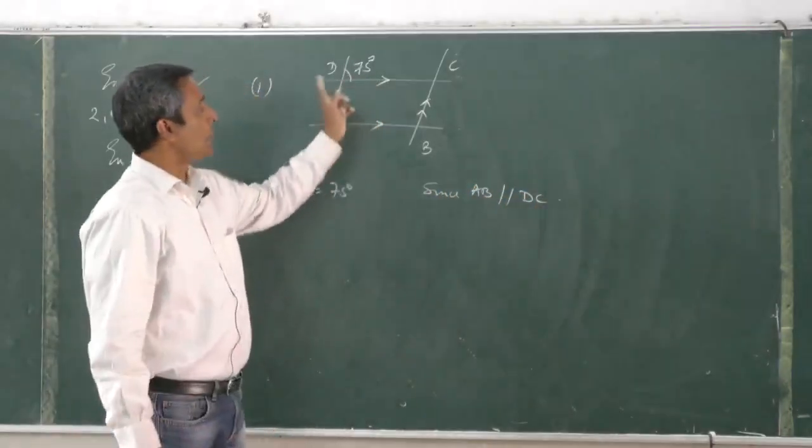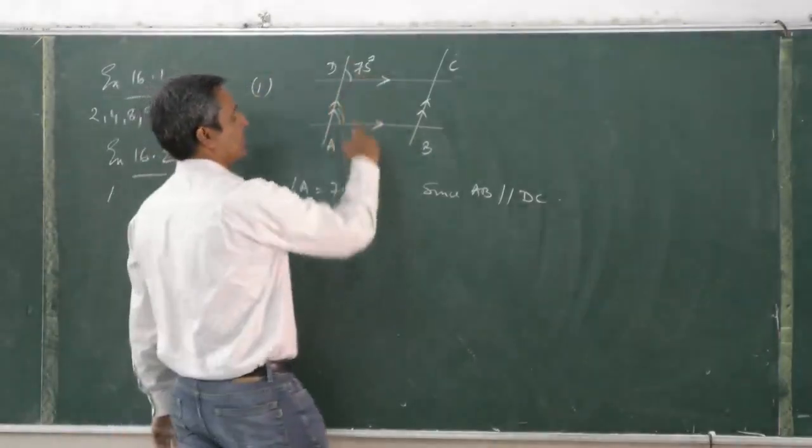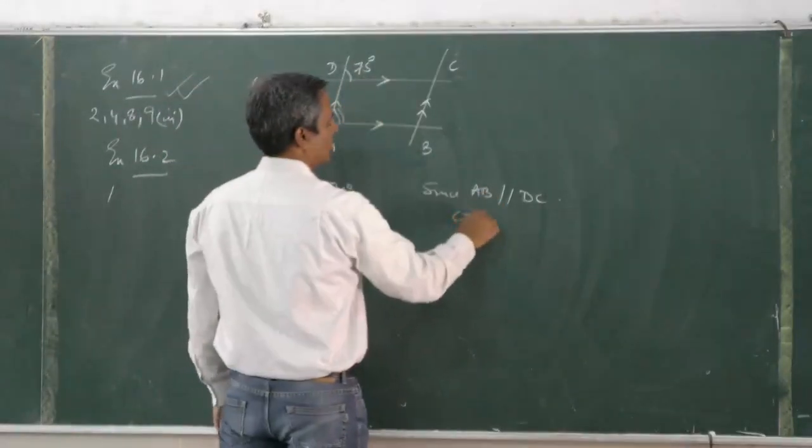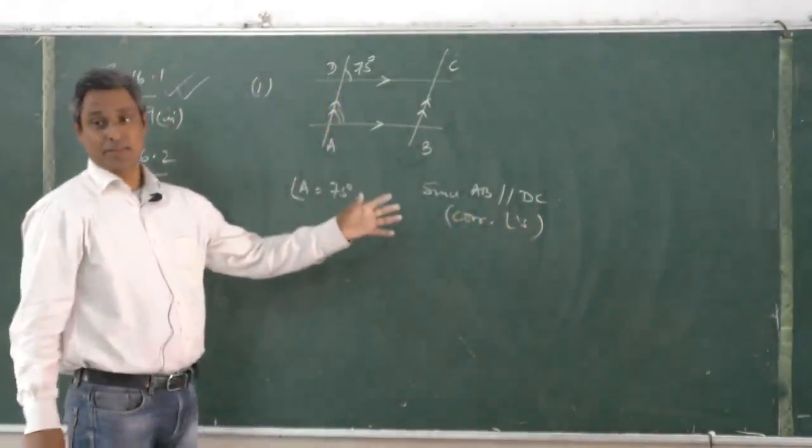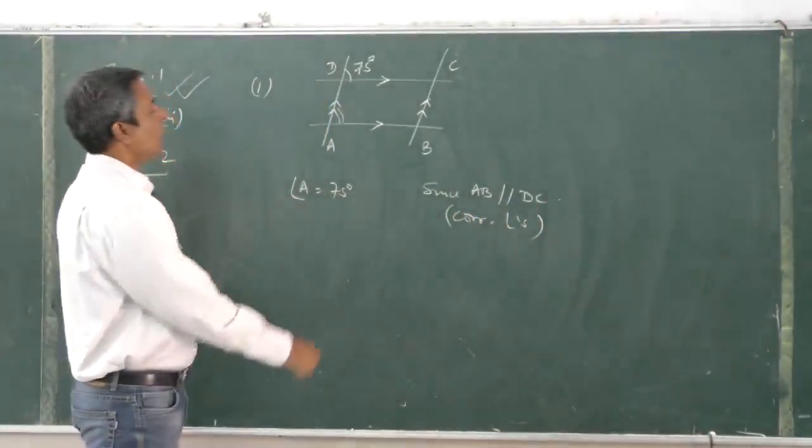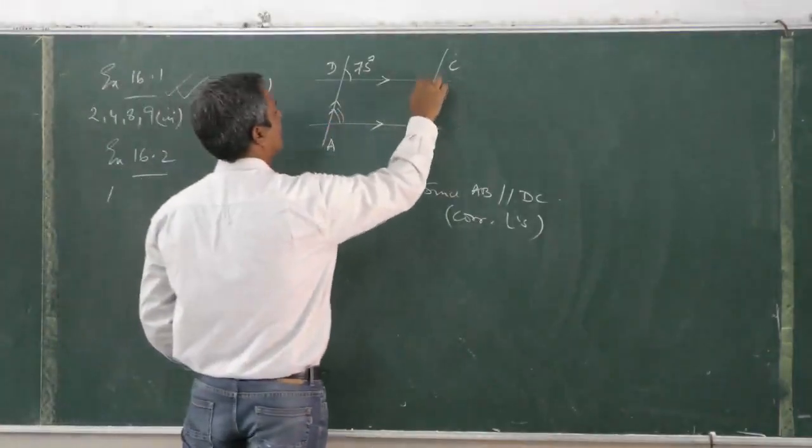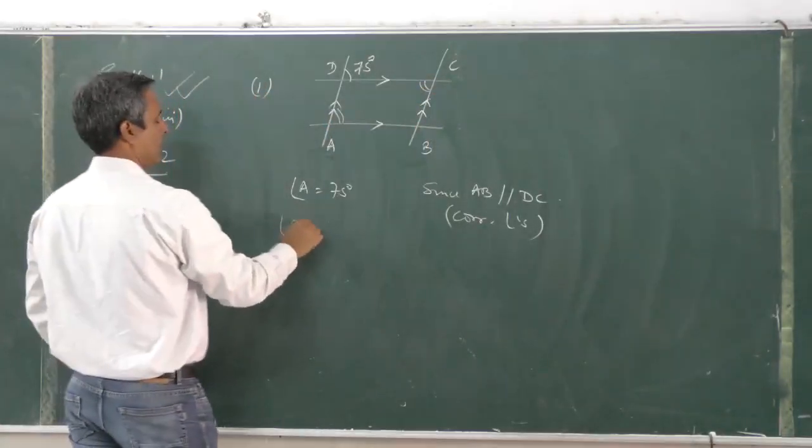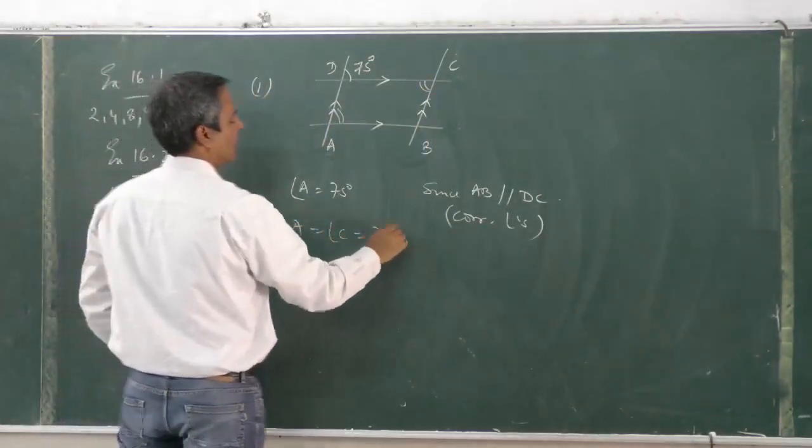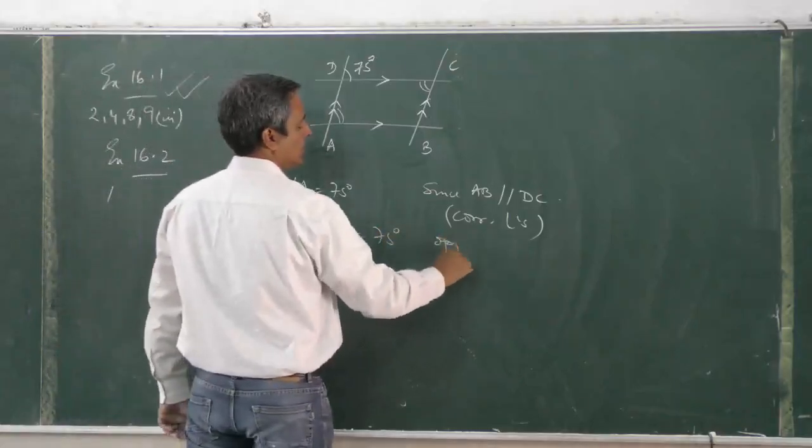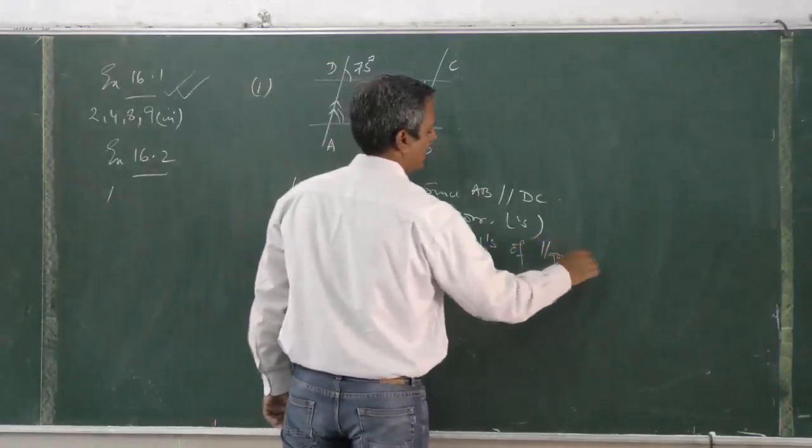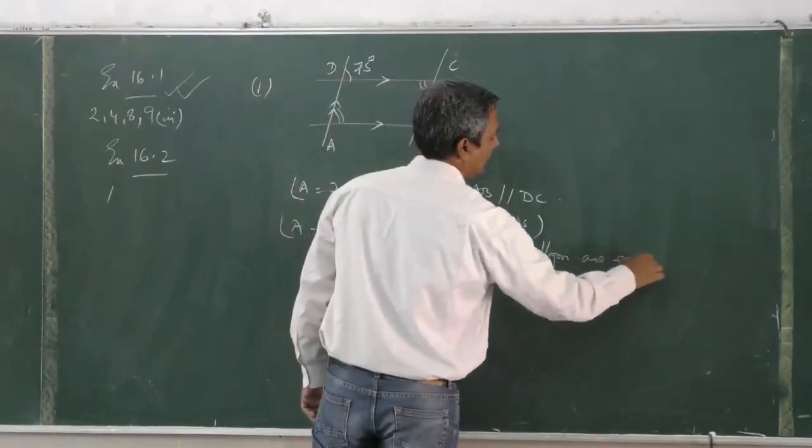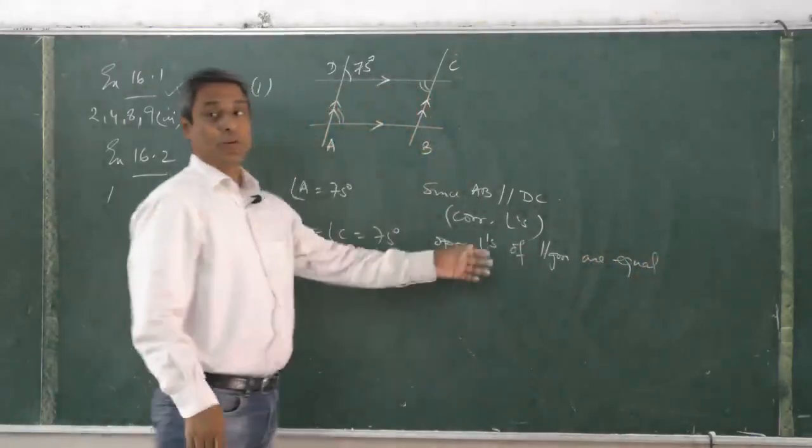Now angle A and angle C will be equal. C will be equal. Why? Opposite angles of parallelogram are equal. So in geometry you must write the reasons.